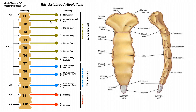An important rule for ribs 2 through 9: they articulate with the thoracic vertebra bearing the same number and also the vertebra above it. So rib 5 articulates with T5 and T4; rib 4 articulates with T4 and T3. This is true for ribs 2 through 9. It does not apply to ribs 1, 10, 11, and 12, which all articulate with complete costal facets entirely on the bodies of their corresponding vertebrae.